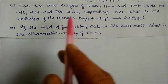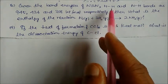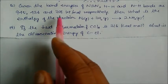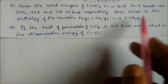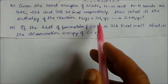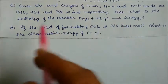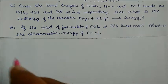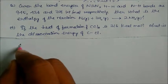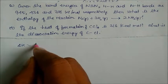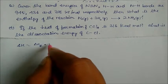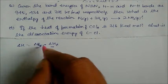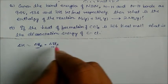Given: bond energy of N₂ (nitrogen-nitrogen) = 945, H₂ (hydrogen-hydrogen) = 436, and N-H bond = 391 kilojoule per mole respectively. What is the enthalpy of the reaction N₂ + 3H₂ → 2NH₃? The heat of reaction is delta H = bond energy of reactants minus bond energy of products.